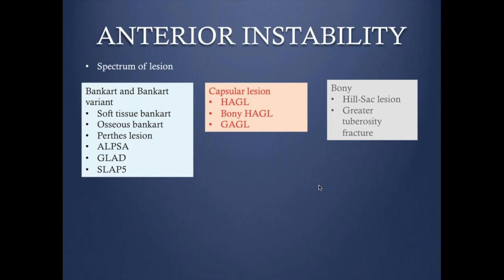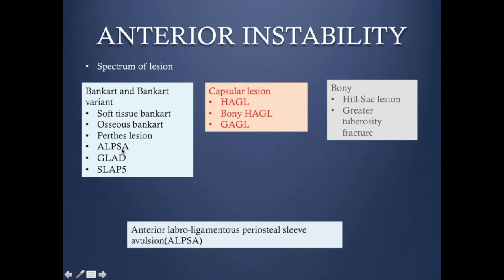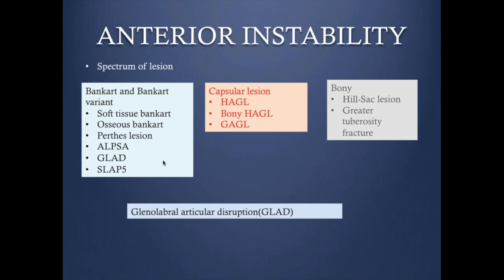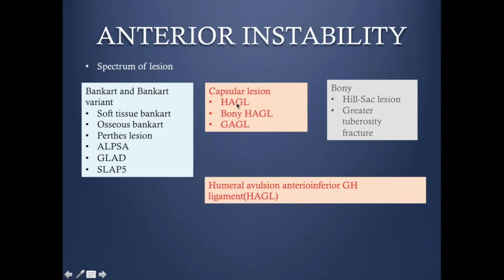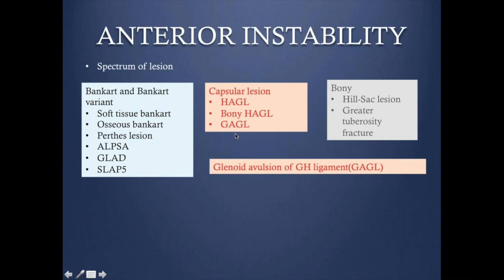The soft tissue Bankart involves injury of the anterior inferior labrum affecting only the labrum or cartilage. Osseous Bankart has an osseous component. The Berthes lesion has the capsule and periosteum intact but with a tear present. ALPSA is the anterior labral ligamentous periosteal sleeve avulsion. GLAD involves glenolabral articular disruption when the glenoid cartilage is involved. SLAP 5 is the extension all the way to the superior labrum. Capsular lesions include HAGL — humeral avulsion of the glenohumeral ligament — bony HAGL, and GAGL, avulsion of the glenohumeral ligament from the glenoid side.